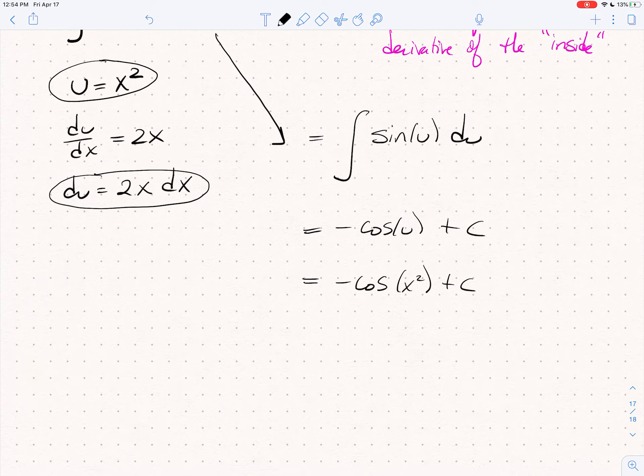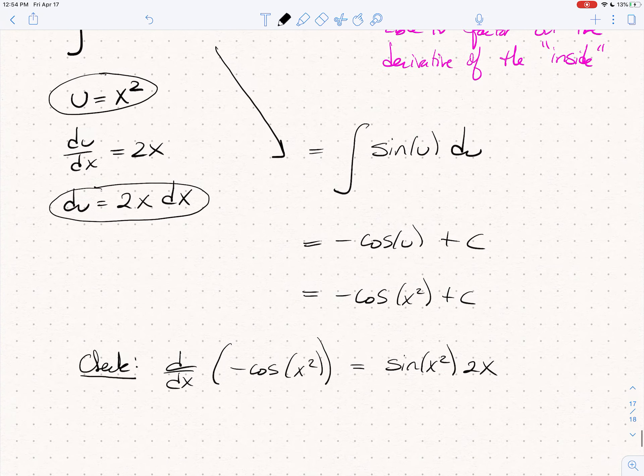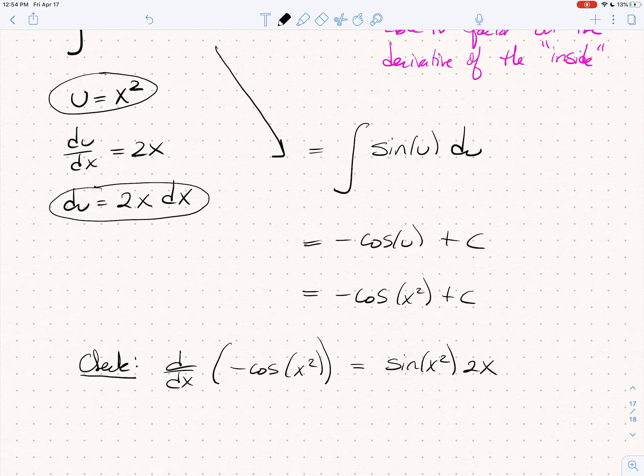Now, surely, it wasn't that easy. Let's see if this works. Let's check now. We're going to do a check. You can always check these. The derivative of minus cosine of x squared is, well, chain rule. It's going to be sine of x squared times the derivative of the inside times 2x, which is exactly what we had. So, this technique works.